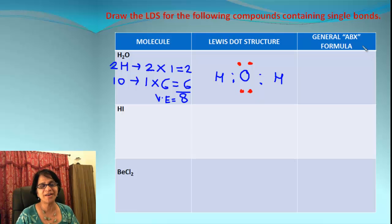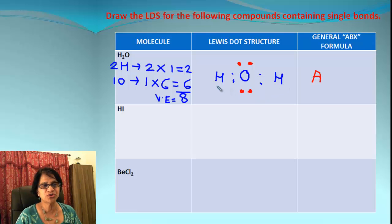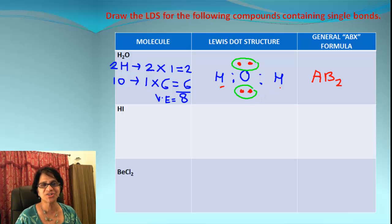The next step is to write down the ABX formula. A stands for the number of central atoms — in this case, we only have one oxygen, so A is 1. B represents the atoms which are surrounding — we have two surrounding atoms, so B is 2. X is the number of electron pairs that are not shared and which are around the central atom — we have two lone electron pairs around oxygen, so X is 2. The formula is AB₂X₂.